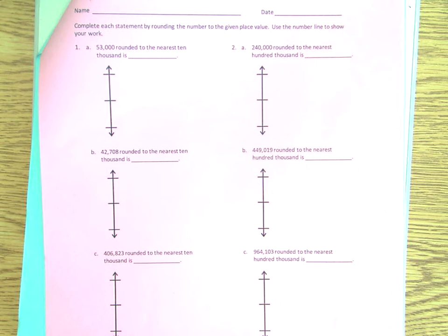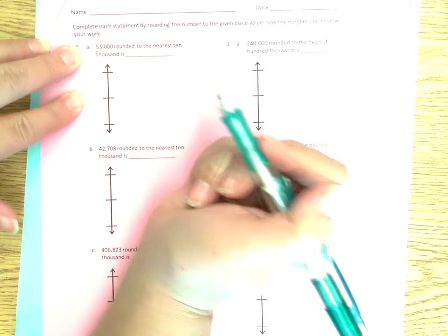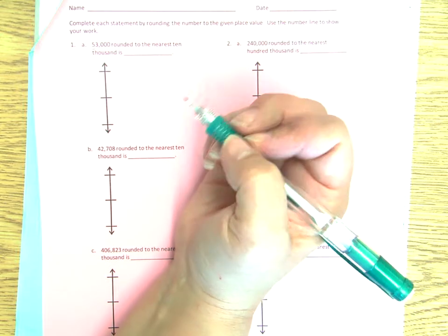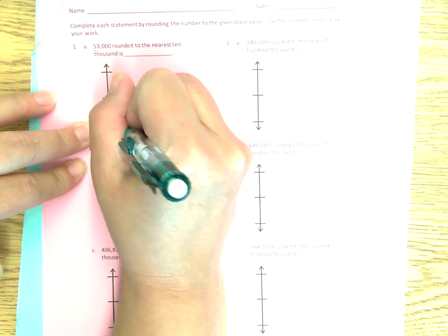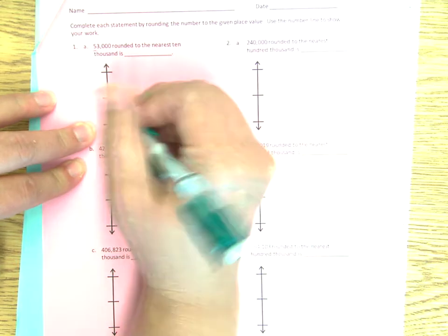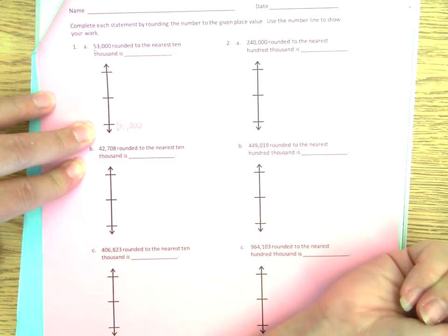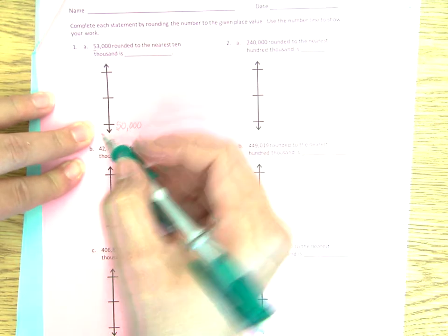Okay, so 53,000 rounded to the nearest 10,000 is what? We are looking at the 10,000 place value. So if it helps you, you might want to just underline that place value that you're working with. We will put that place value at the bottom and put zeros after it — so 50,000 will be our bottom amount.